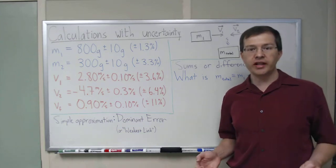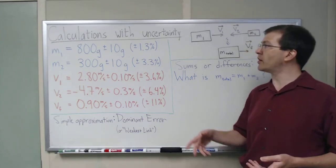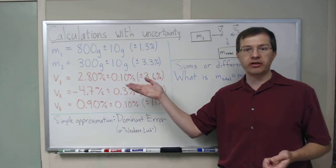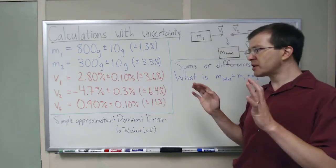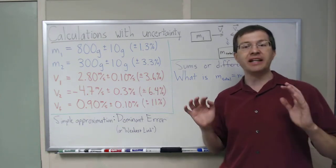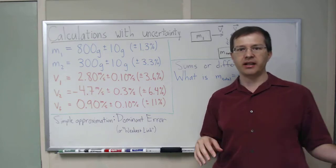This is one of several short videos explaining how to do calculations with uncertainty in your measured data. In particular, a simplified version where we're just using the dominant error approximation for propagating uncertainties.